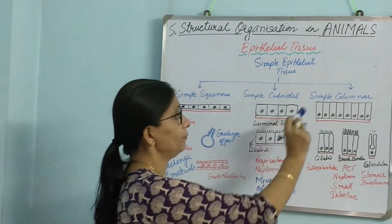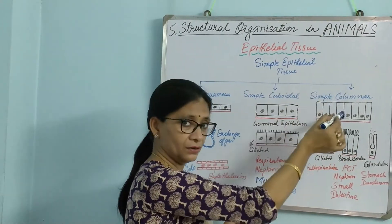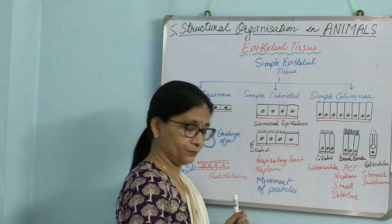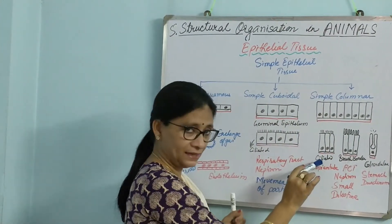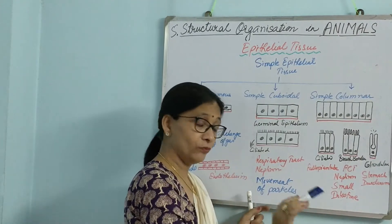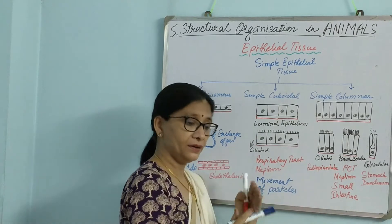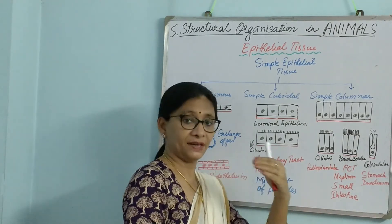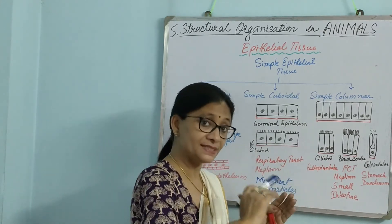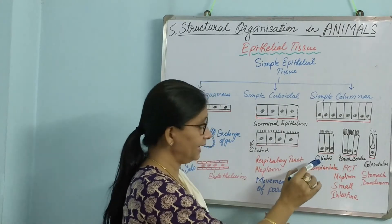Now the next type is simple columnar epithelium. Here the cells are very tall, cylindrical-like. Simple columnar is of three types. First is ciliated — the purpose here is movement. Ciliated columnar is found in the fallopian tube, where the egg has to be moved inside. The egg releases from the ovary and comes through the fallopian tube, moved by ciliated columnar epithelium.